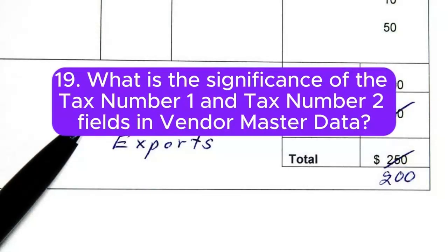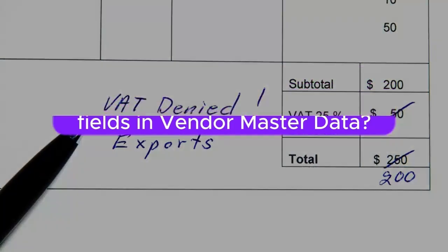19. What is the significance of the tax number 1 and tax number 2 fields in Vendor Master Data? Answer: These fields store tax identification numbers or registration numbers relevant to tax authorities. They are essential for legal and regulatory compliance.